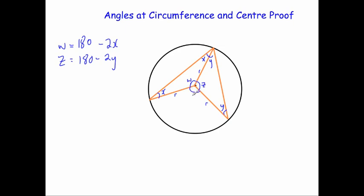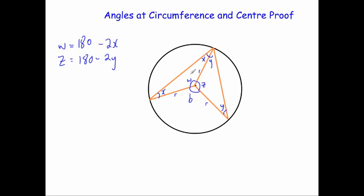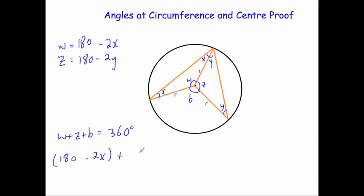I'm going to call the angle at the bottom B. I know that W plus Z plus B must equal 360 — the angles around a point. So: W plus Z plus B equals 360. Replacing W with 180 minus 2X and Z with 180 minus 2Y, we get: (180 minus 2X) plus (180 minus 2Y) plus B equals 360.